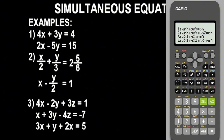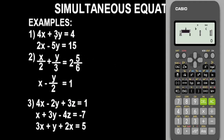Press 1 and it brings us to the input screen. We have two equations here, where a, b, and c represent values to input. For equation 1 of question 1, we have 4x + 3y = 4. The coefficient of x is 4, the coefficient of y is 3, and the constant c is 4. Remember, the coefficient is the value in front of an unknown or variable.